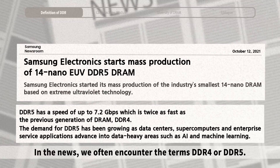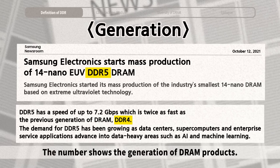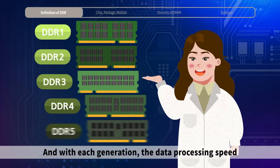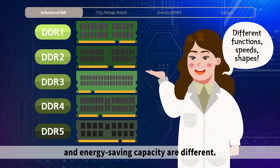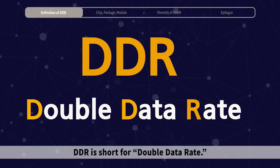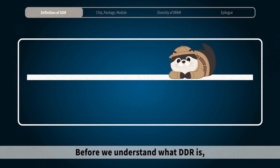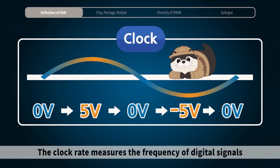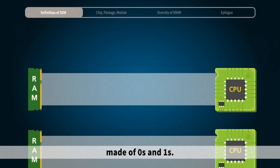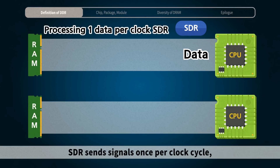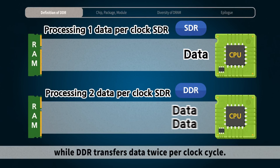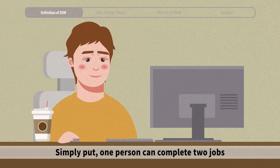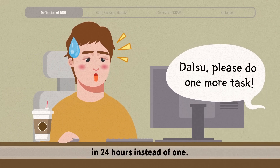In the news, we often encounter the terms DDR4 or DDR5. The number shows the generation of DRAM products, and with each generation, the data processing speed and energy-saving capacity are different. DDR4 is short for double data rate. The clock rate measures the frequency of digital signals made of zeros and ones. SDR sends signals once per clock cycle, while DDR transfers data twice per clock cycle. Simply put, one person can complete two jobs in 24 hours instead of one.